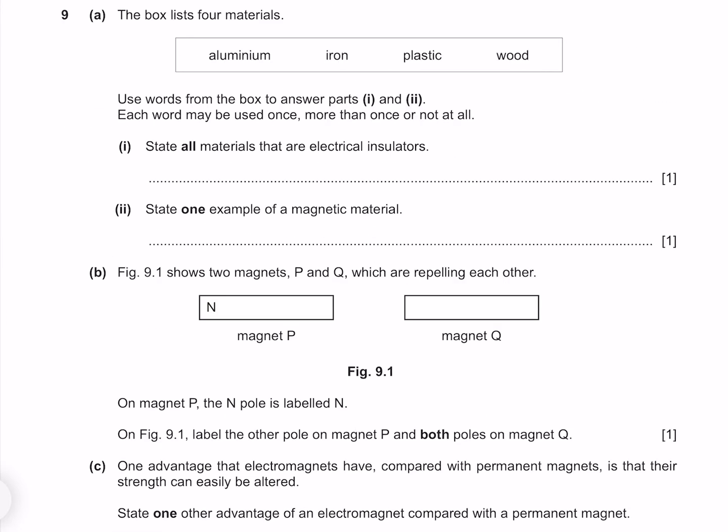The box lists four materials. Use words from the box to answer parts I and II. Each word may be used once, more than once or not at all. State all materials that are electrical insulators. Aluminum isn't, iron isn't, and plastic and wood are. State one example of a magnetic material. Of the four, only iron is magnetic.